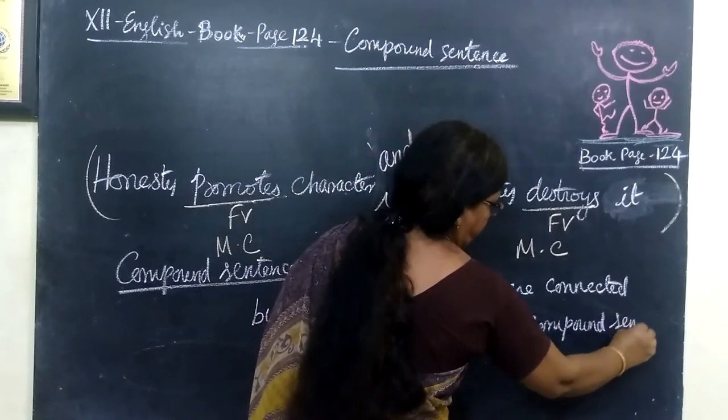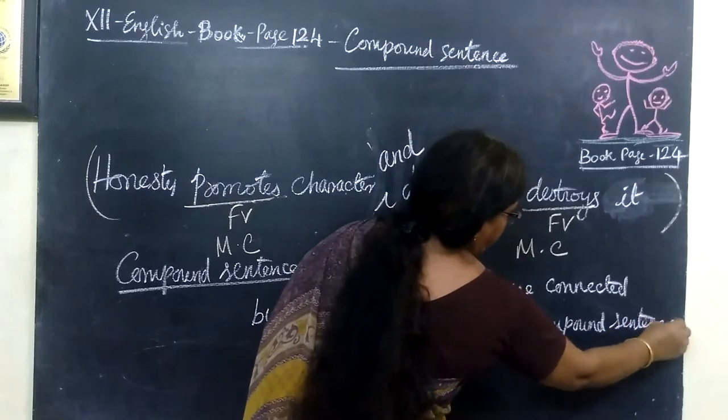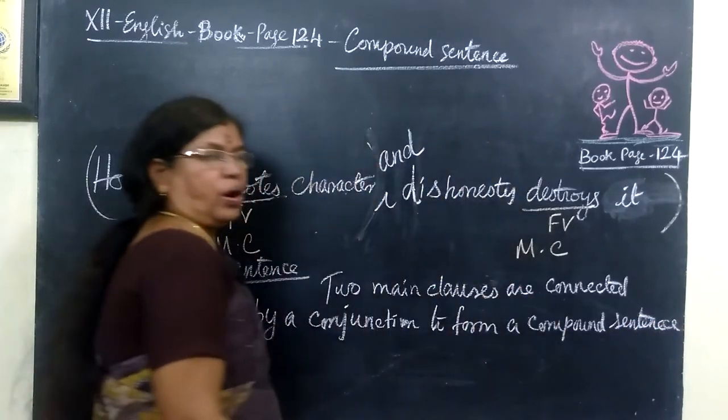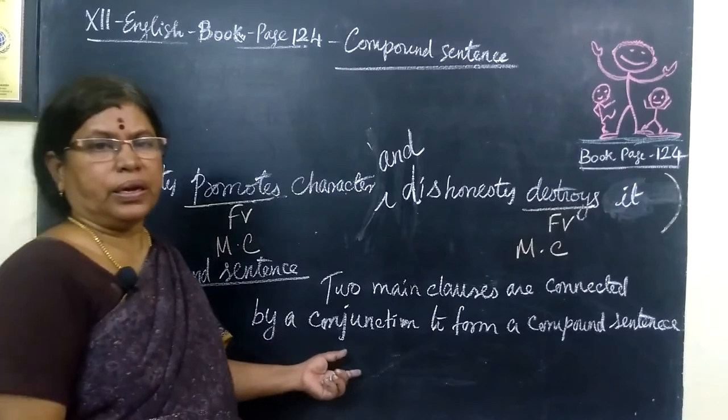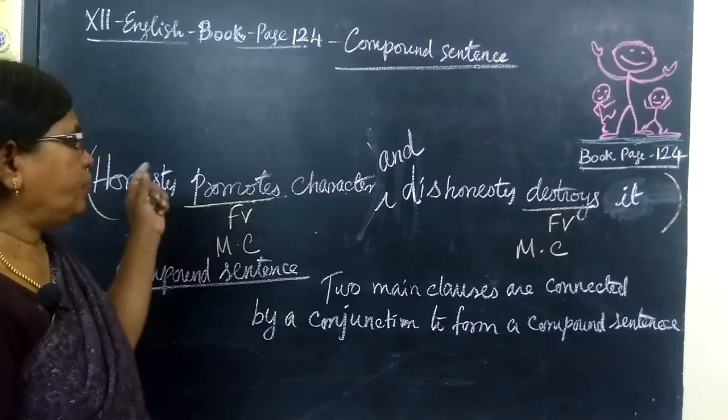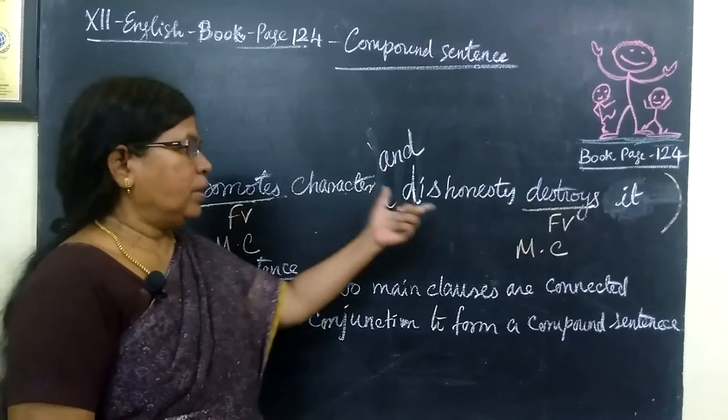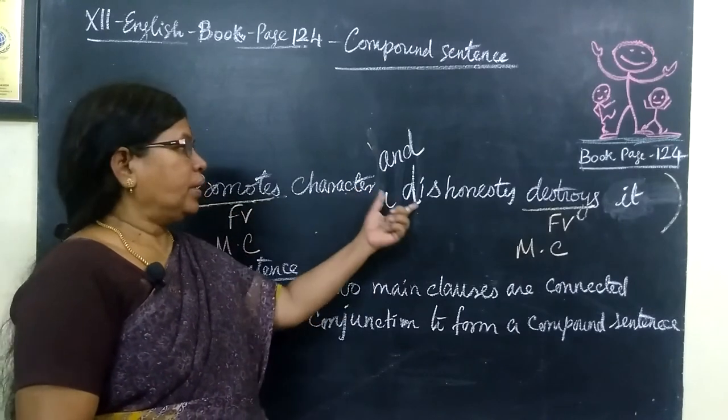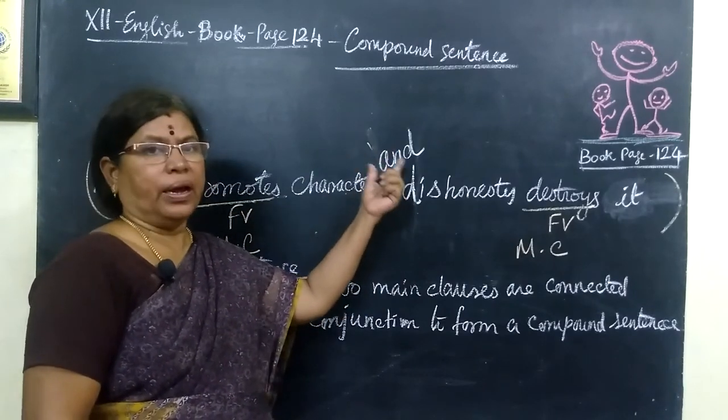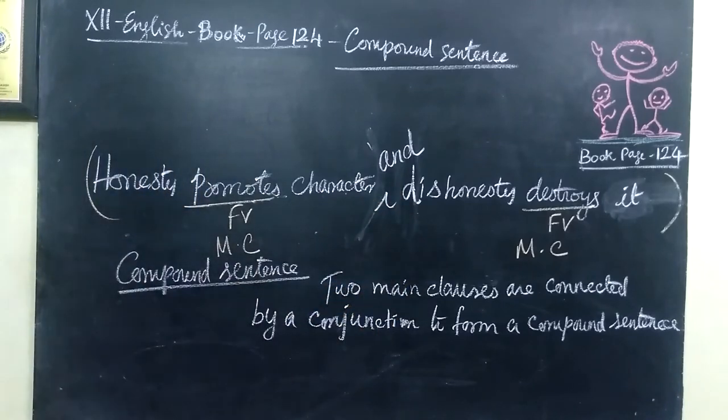In compound sentence, there is no subordinate clause. In the complex sentence we find subordinate clauses, but in compound sentence we find two main clauses. Here one main clause, another main clause. They are connected by the conjunction 'and'. Now we form five sentences.